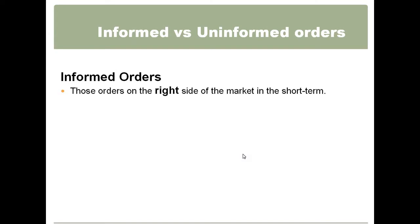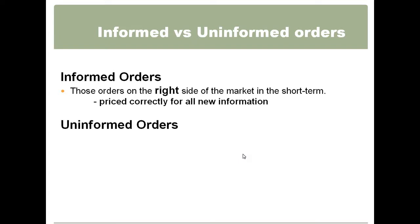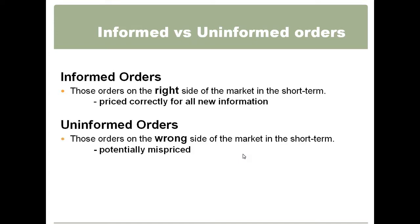Let's first talk about information. Informed orders — I would define an informed order as an order that is priced correctly for all new information, basically reflecting everything that is new right now. Uninformed orders are basically orders that are still out there — a limit order sitting out there that has not priced in new information. For example, if you had a limit order out there and held it through a jobs number, your limit order was all of a sudden not priced for that new information. Any orders that are mispriced get picked off very quickly.